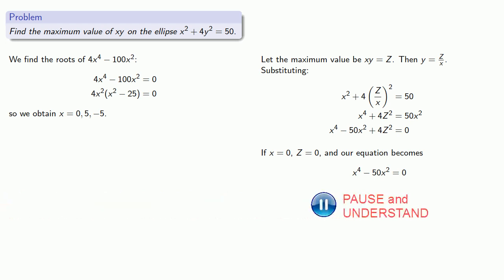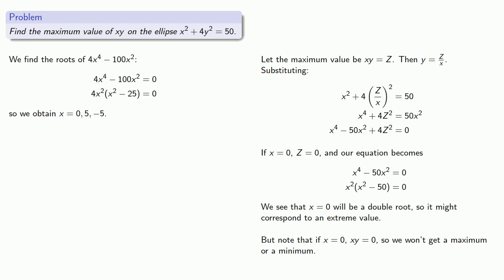So if x equals 0, z is equal to 0, and our equation becomes. We see that x equals 0 will be a double root, so it might correspond to an extreme value. But note that if x equals 0, xy is 0, so we won't get a maximum or a minimum.